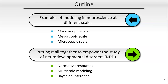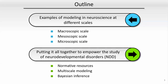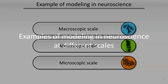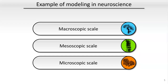Starting with examples of modeling in neuroscience at different scales, I will cover three scales. In the context of this presentation, I will refer to the macroscopic scale as being the whole brain scale. The microscopic scale will be the cellular scale. The mesoscopic scale in between is the scale of cortical columns or small local cell assemblies in the brain.